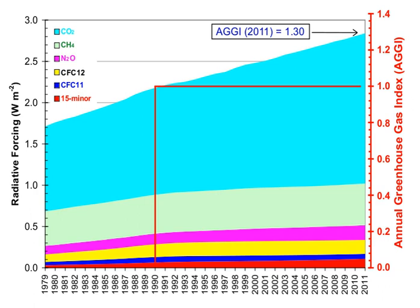The contribution of each gas to the greenhouse effect is determined by the characteristics of that gas, its abundance, and any indirect effects it may cause. For example, the direct radiative effect of a mass of methane is about 84 times stronger than the same mass of carbon dioxide over a 20-year time frame, but it is present in much smaller concentrations so that its total direct radiative effect is smaller, in part due to its shorter atmospheric lifetime.